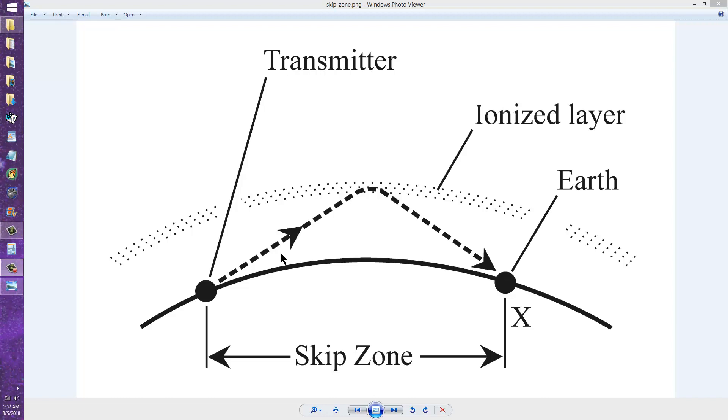Well, the band might not be dead, and then again, it might be. If point X lies beyond the skip zone, you might experience the dead band delusion if you don't hear point X, but you'd hear that station if it did transmit. But if point X lies within the skip zone, even if station X transmits, you won't hear it. So it won't be a delusion at all. The band between you and point X will, in fact, be dead.